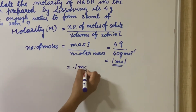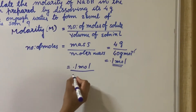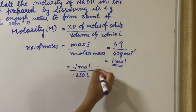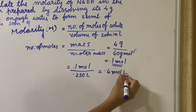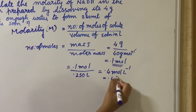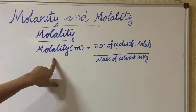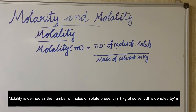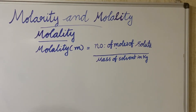So molarity equals 0.1 mole divided by the volume of solution, which is 250 ml or 0.250 L. Now we turn to molality. Molality is the number of moles of solute present in 1 kg of solvent, denoted by m. Molality equals number of moles of solute divided by mass of solvent in kg.